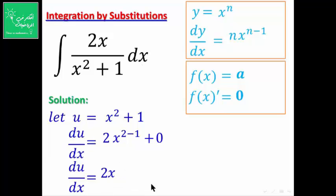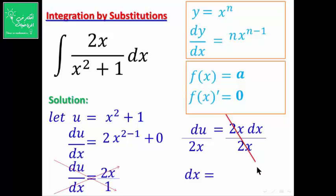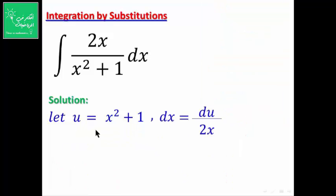لدينا dy/dx = 2x. للحصول على قيمة dx نضرب طرفياً: dy = 2x · dx. ثم نقسم الطرفين على 2x: dx = dy / (2x). إذاً المعطيات متوفرة: u = x² + 1 و dx = dy / (2x).